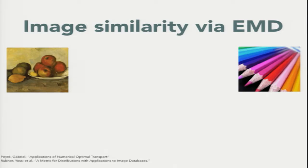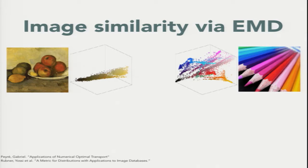suppose that you have a couple of images and you want to compare them, see how similar they are. I can represent these in color space by taking each pixel and saying where it lives inside a three-dimensional space of colors.